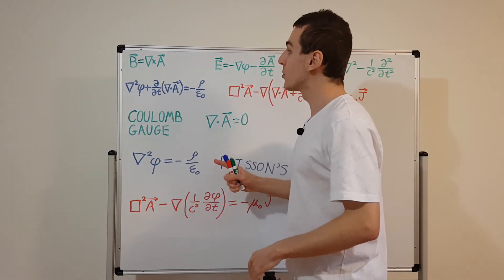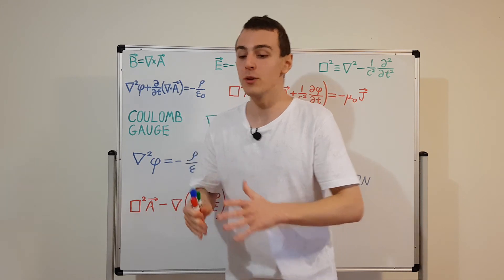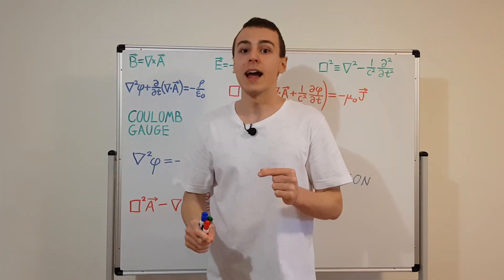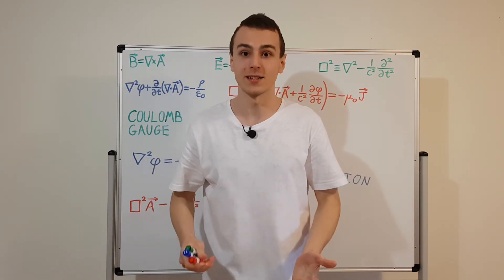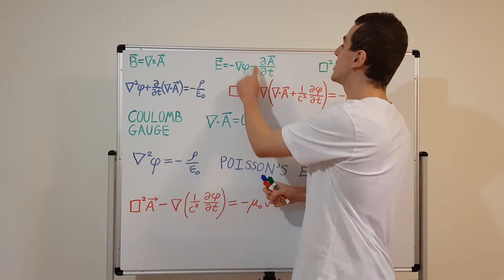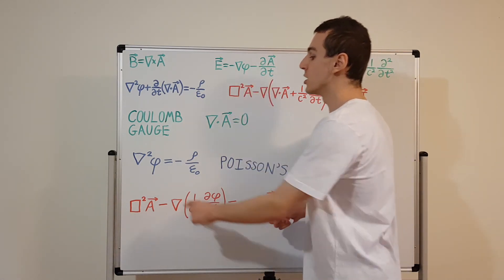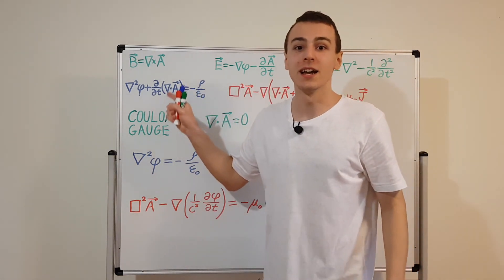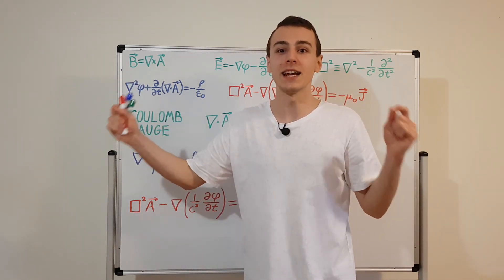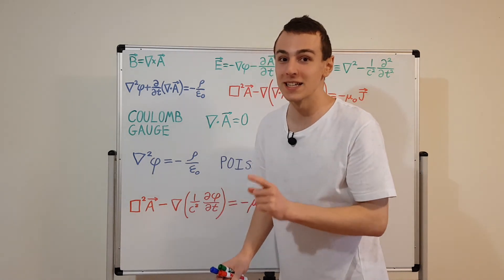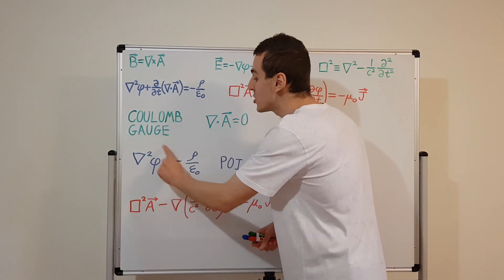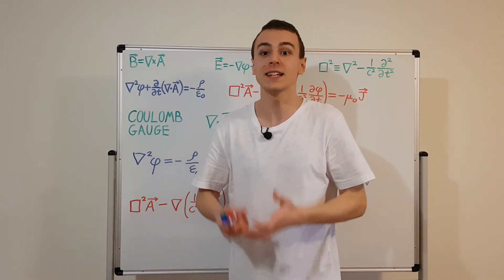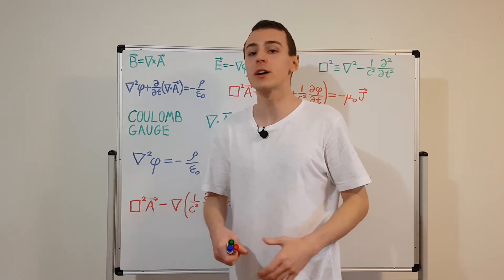If we start moving charges and move from electrostatics into electrodynamics, there will always be a delay because the maximum speed a signal can travel is the speed of light. That delay is accounted for by the A term. Once charges start moving, phi alone doesn't contain enough information — you need A as well to determine the electric field. That saves us from violating special relativity. Even though phi changes instantaneously, we're not measuring phi — we're measuring the electric and magnetic fields, which do respect the speed-of-light limit.